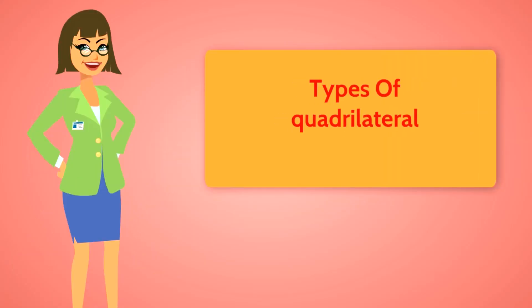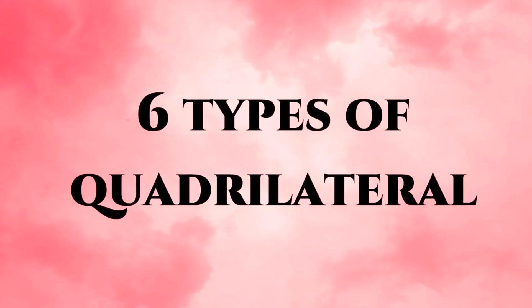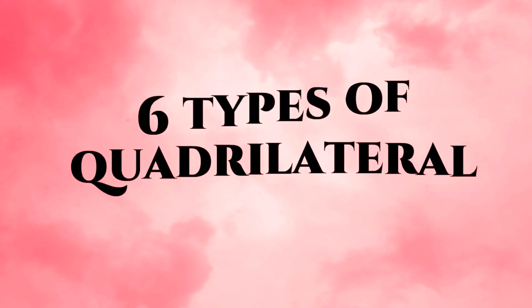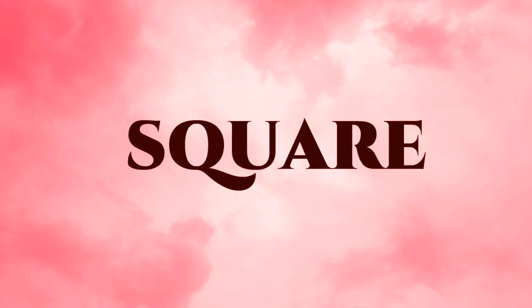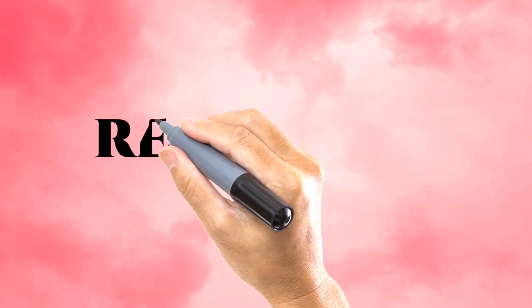In this video we are going to discuss about types of quadrilateral. There are six types of quadrilateral. Number one: square — S-Q-U-A-R-E. This is the shape of a square. There are four equal sides and opposing sides are parallel.